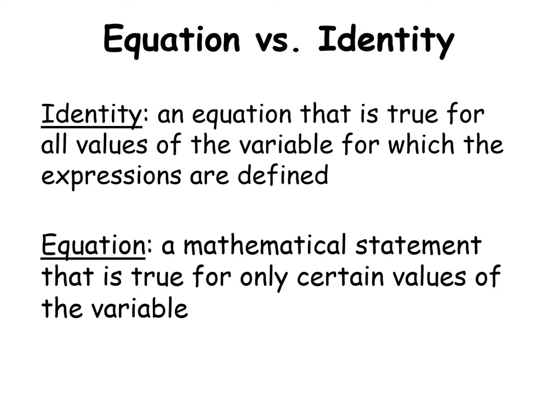Before solving equations, a quick note on terminology: an identity is an equation true for all values of the variable, while an equation is true only for certain values. When asked to solve, it will always be an equation. There's a separate video on trigonometric identities, sine rule, cosine rule, and 3D trigonometry — all linked below. In this video we're dealing with equations.